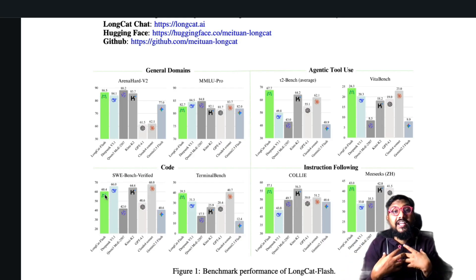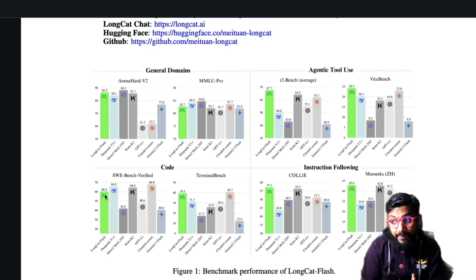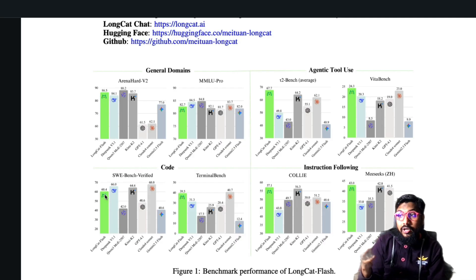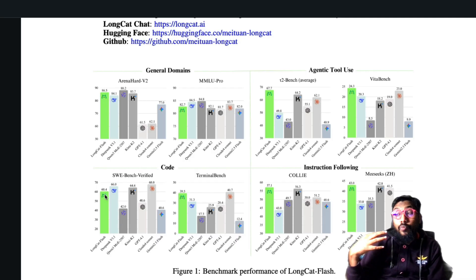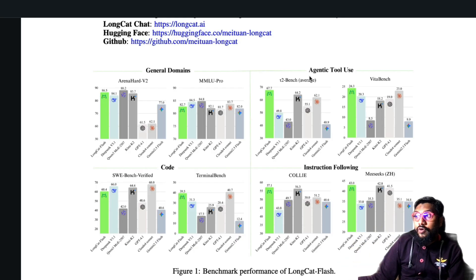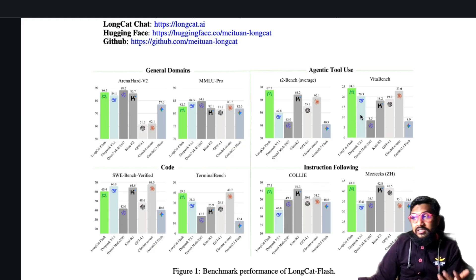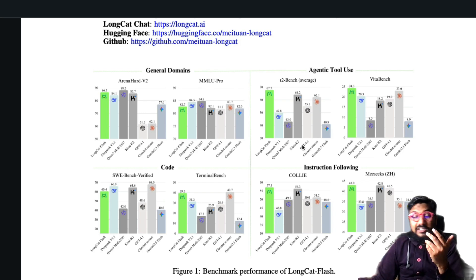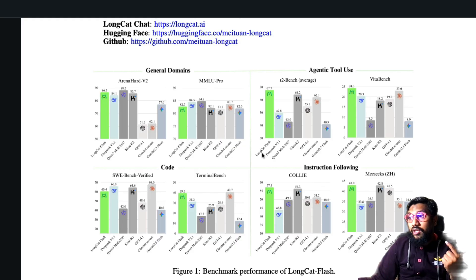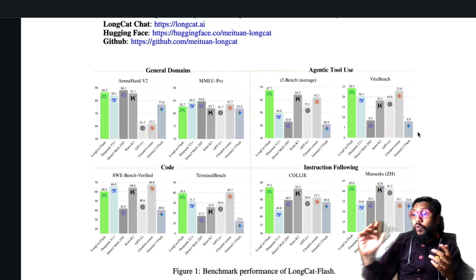The SWE-bench Verified score surprised me — when a model does very well on Terminal Bench, I'd naturally expect it to also do well on SWE-bench Verified, but in this case the model is much below Kimi K2 there. For a model heavily optimized for coding and agentic tasks, on agentic benchmarks like Pi2Bench and Vida Bench, the model is better than every other model in that tier: Gemini 2.5 Flash, Claude Sonnet, GPT-4.1, Kimi K2, Qwen 3 MoE, and DeepSeek V3.1.